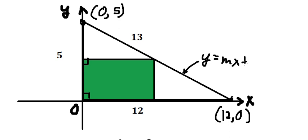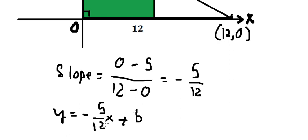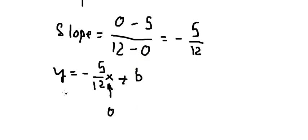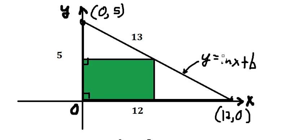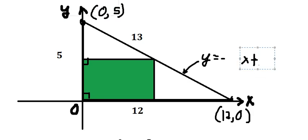We want to find the equation of the hypotenuse line because we need to set up the function to find the area of the rectangle. Using slope-intercept form, we plug in the slope negative 5 over 12, and using the point (0, 5) we get b equals 5. So the equation of the line is y = (-5/12)x + 5.